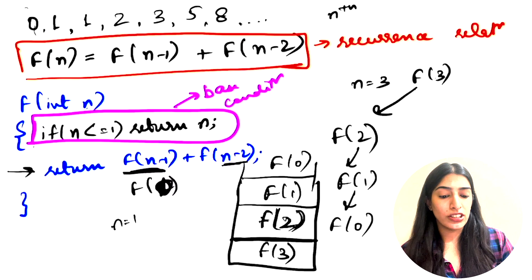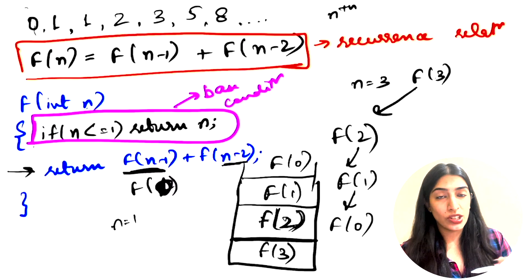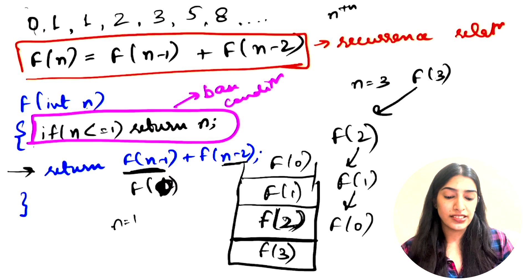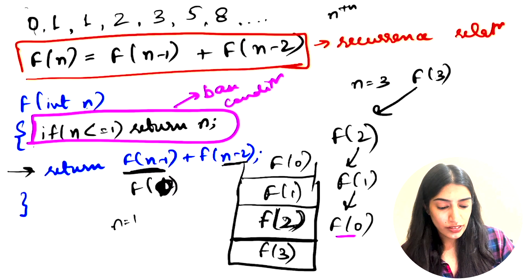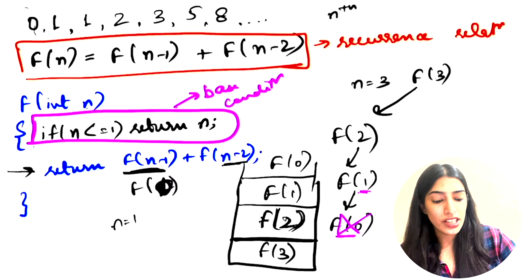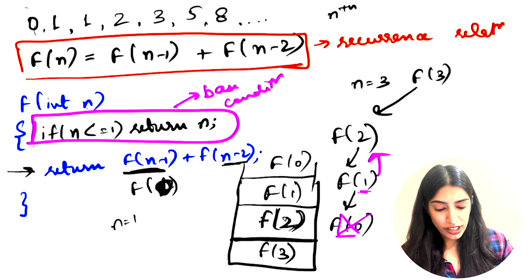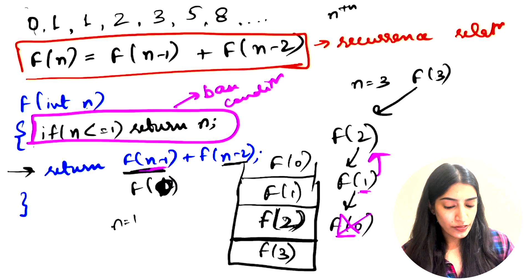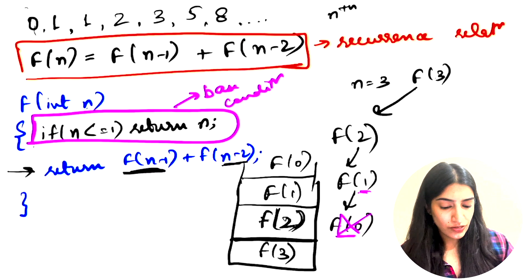So to recap: the first thing we saw is the recurrence relation, and the second thing is the base condition — if n is less than or equal to one, return n itself. Now from F(0) we actually won't go into F(0), because from F(1) itself we return 1 based on the base condition. Then for F(2), we would have called F(1) plus F(0).